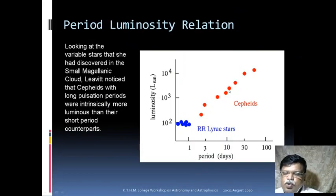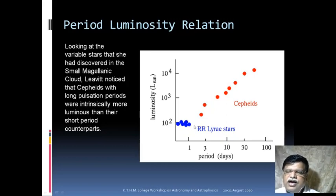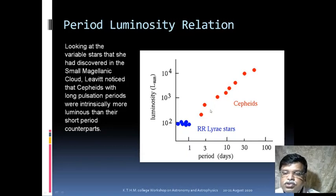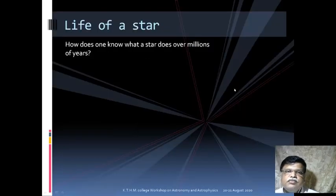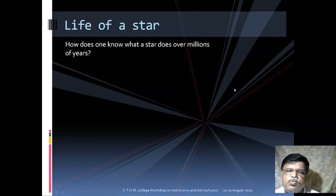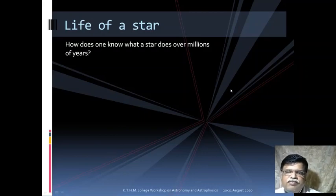Now, how do we know how a star progresses through its life? Stars live for millions of years and we can't observe one star for that long. The solution is statistical — analogous to tossing a coin: tossing one coin 1,000 times or tossing 1,000 coins once give similar statistical results. Similarly, instead of watching one star for a million years, we can study millions of stars for a few years. Hertzsprung and Russell plotted many stars on a graph with absolute magnitude on the vertical axis and spectral class on the horizontal axis — this is the Hertzsprung-Russell (HR) diagram.